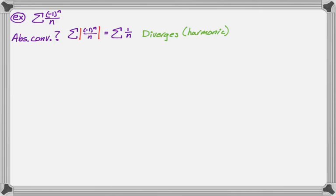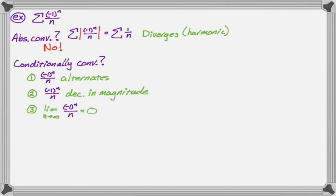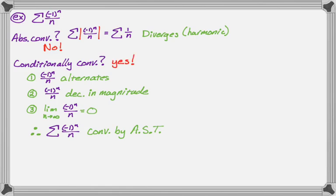So at this point we know this series is not absolutely convergent. Now we're going to check to see if it's conditionally convergent. I see that the terms alternate, the terms decrease in magnitude — the absolute value of the term — those are decreasing because one over n is a decreasing function. And I also see that the limit of the nth term is approaching zero. Those are the three conditions for the alternating series test, so the sum of negative one to the n over n converges by the alternating series test. So we can say this is conditionally convergent.